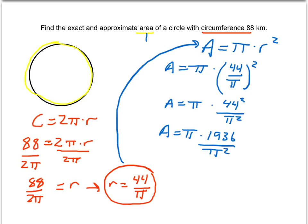So that gives us π times 44 squared is 1,936 divided by π squared. And now that gives us, if we multiply our fractions, the top part is 1,936π all over π squared.